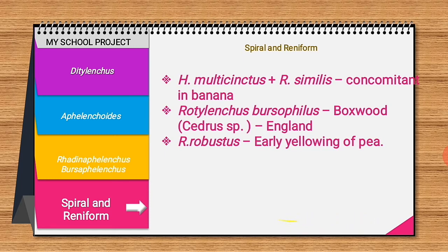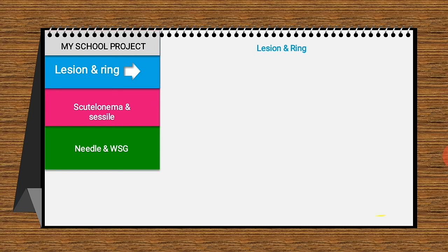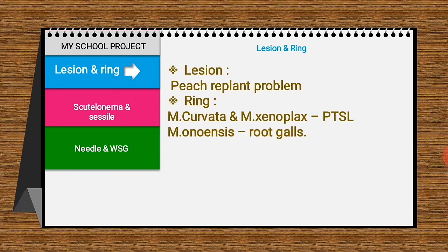Regarding lesion nematode, it causes the peach replant problem. Pratylenchus penetrans attacks newly developing peach roots. When the population of P. penetrans increases, penetration also increases, then gradually declines. This is most severe in the interval between removal of old trees and planting of new peach trees — this is the peach replant problem.